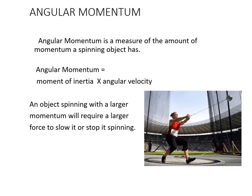This is probably an excellent time to press pause and gather your thoughts before moving on further. Angular momentum is a measure of the amount of momentum a spinning object has. As opposed to linear momentum — mass times velocity — we now look at moment of inertia times angular velocity. An object spinning with larger momentum will require a larger force to slow or stop it spinning.